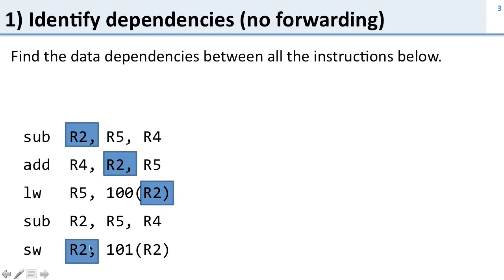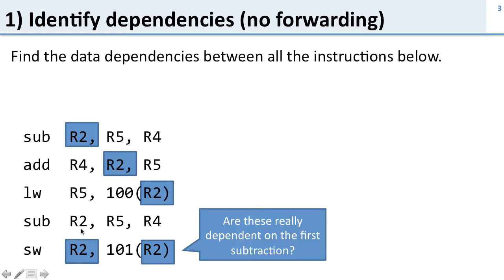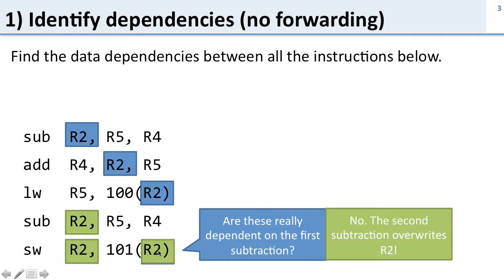How about the ones further down? Store word uses R2 and writes R2 into memory. But these aren't actually dependent on the first subtraction because the second subtraction instruction is writing over R2. So the store word will use the R2 from the second instruction, not the first. Subsequent instructions that use R2 will be dependent on that one.